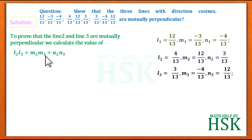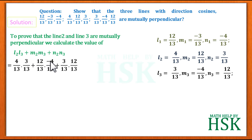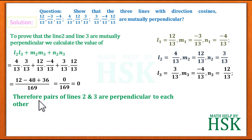Similarly, for lines 2 and 3, we calculate l2·l3 + m2·m3 + n2·n3 = (4/13)·(3/13) + (12/13)·(−4/13) + (3/13)·(12/13). The denominator is 169 and the numerator is 12 − 48 + 36 = 0. Therefore the pair of lines 2 and 3 are perpendicular to each other.